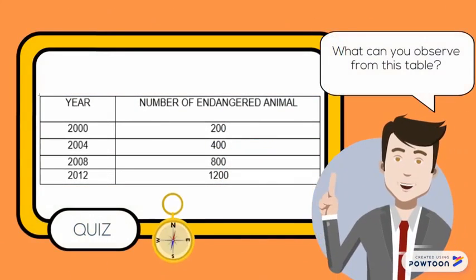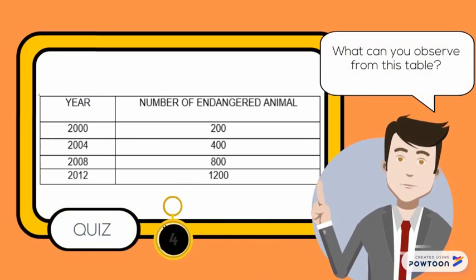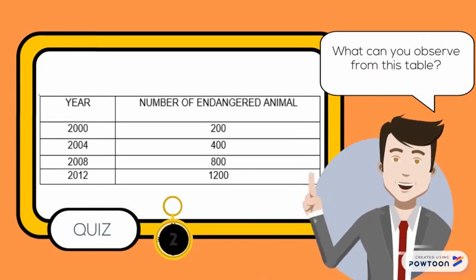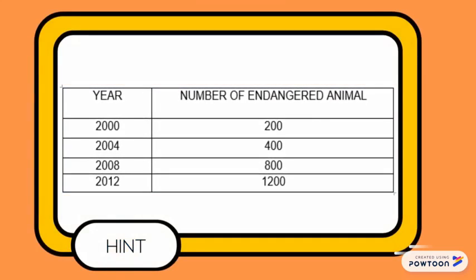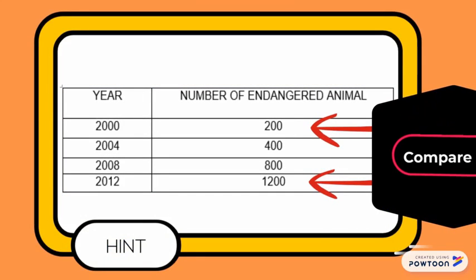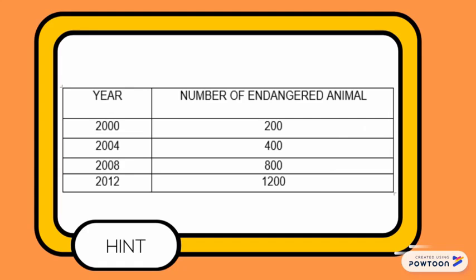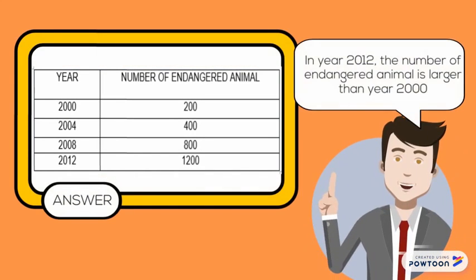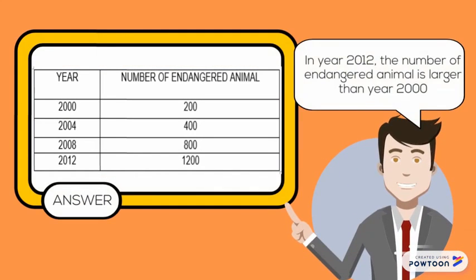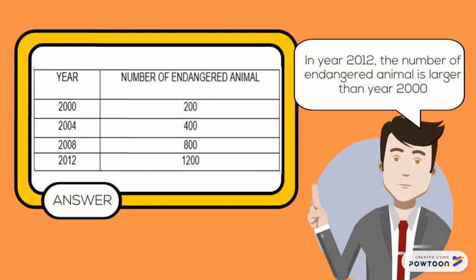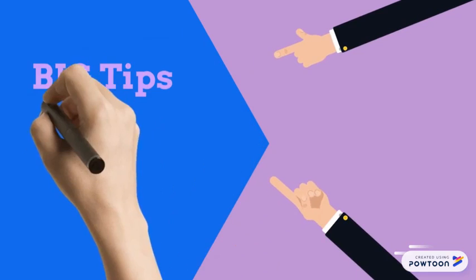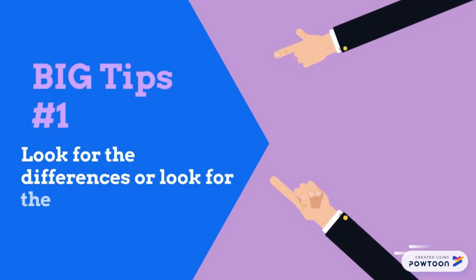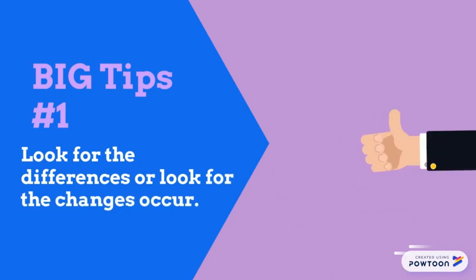Tips: what can you observe from this table? To begin, you must compare from the lowest and highest. The answer is, in the year 2012, the number of endangered animals is larger than in year 2000. Big tip number one: look for the difference, or look for the changes that occur.